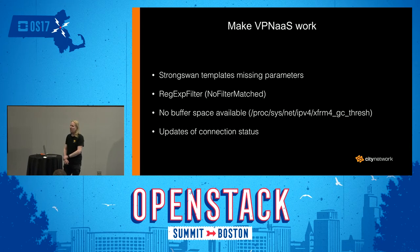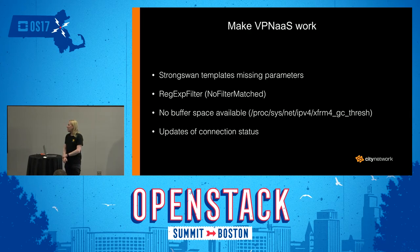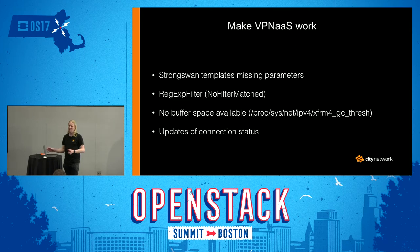One challenge we had was making VPN as a service work. We had a number of different problems we had to troubleshoot and fix, and these were over time — not all at the same time. One of them was that we were running an implementation with StrongSwan on CentOS, and actually the template file for StrongSwan was missing a lot of parameters. It worked if you were creating a VPN tunnel between two similar OpenStack installations, as the configurations would be the same at both places — but not correct. If you were doing a VPN connection to something else, like a VPN appliance, it would fail.